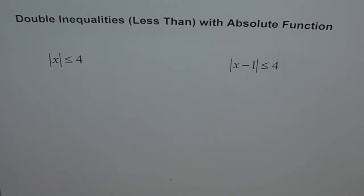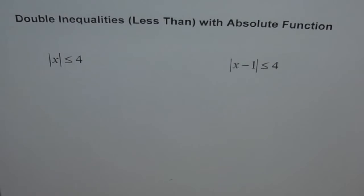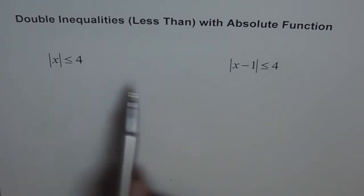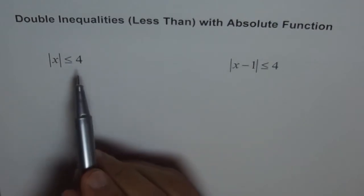Let's try to solve some inequalities with absolute function. The first one here is absolute of x is less than or equal to 4. Let's try to understand this and then work out a way so that we can do this. This one is simpler than the other one, but let's try to understand this one first.